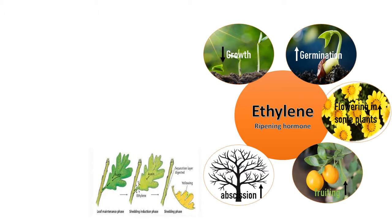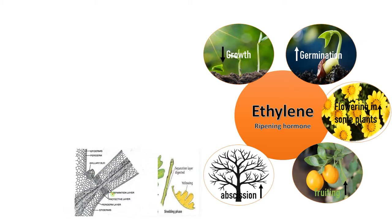During abscission, auxin concentration decreases and ethylene concentration increases at the site of detachment. This leads to yellowing of leaves, chlorophyll degradation, and formation of an abscission layer — a thin layer of cells that causes detachment without wounding the plant. Ethylene thus causes clean abscission, important for seed dispersal and nutrient supply to young leaves.